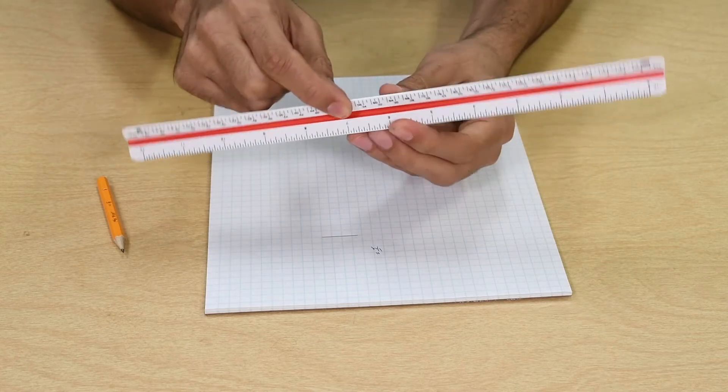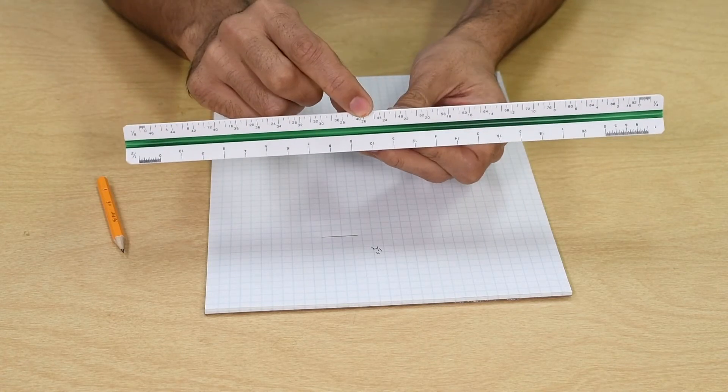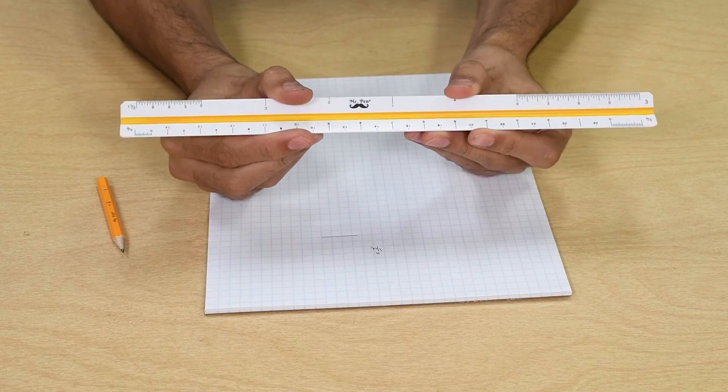As you see, architect scales have 6 sides that make 12 different scales. Scales basically convert lengths on paper into feet.